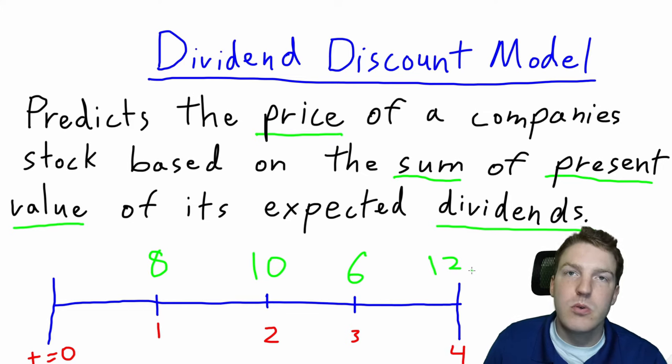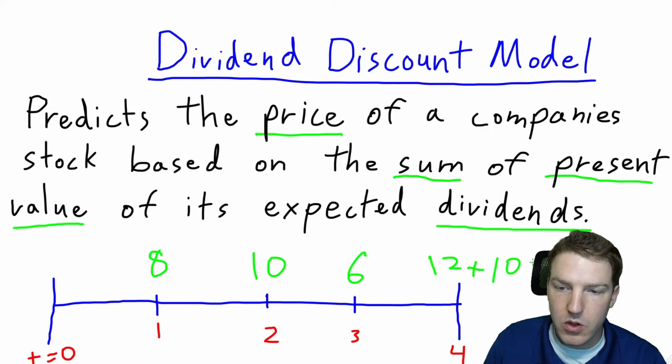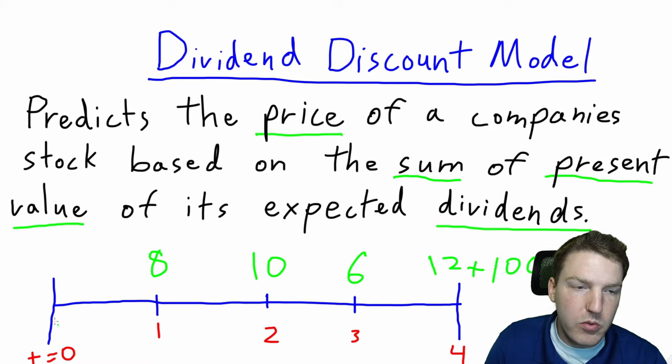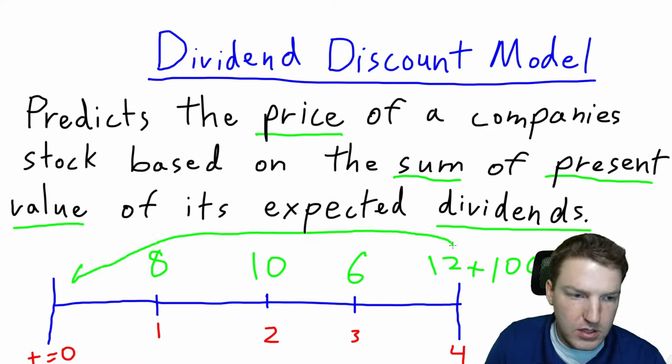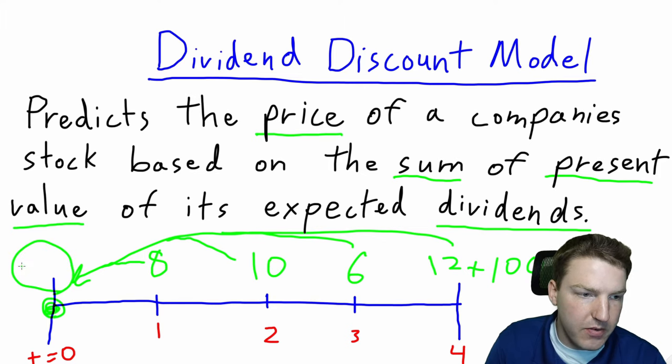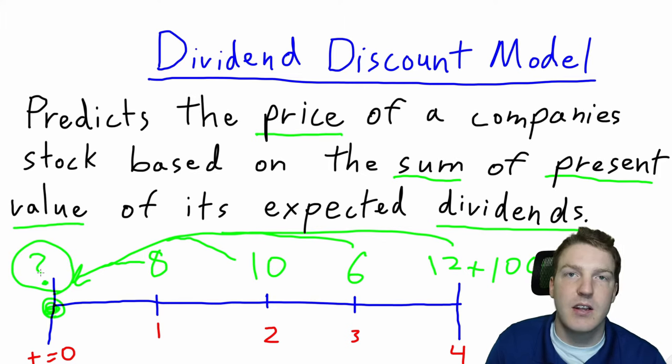But we also expect this stock's price to be $100 at the end of year four. So the cash flow at the end of year four will be 12 plus 100. What we want to know with the dividend discount model is if we discount all of these values, all four of them, back to the starting point of today, what should the fair price of this stock be?